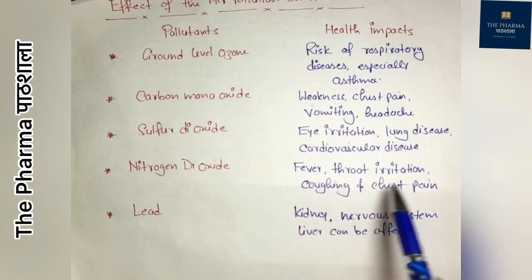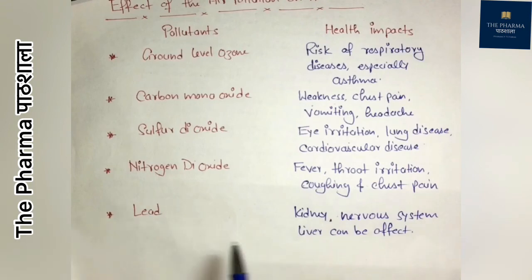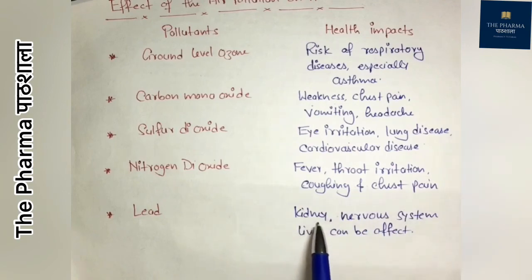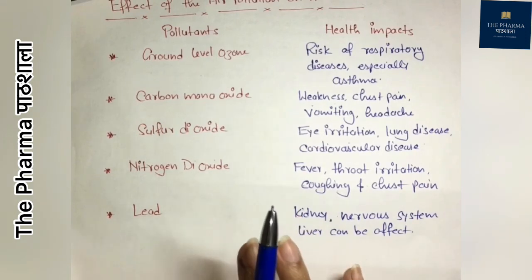Nitrogen dioxide, produced from burning fuels, can cause fever, throat irritation, coughing, and chest pain. Lead, which can come from water wells, petrol engines, and batteries, can mix into the air and damage many organs — including the kidney, nervous system, and liver.